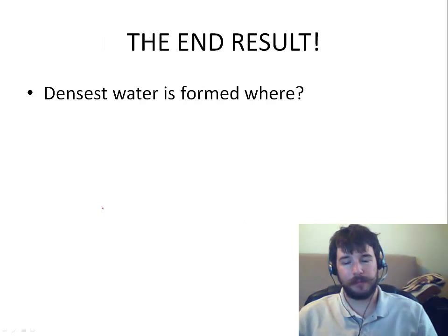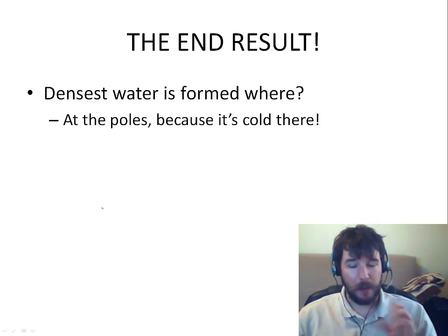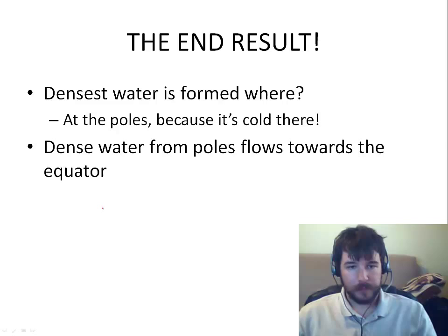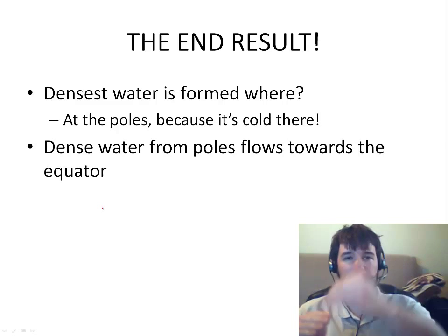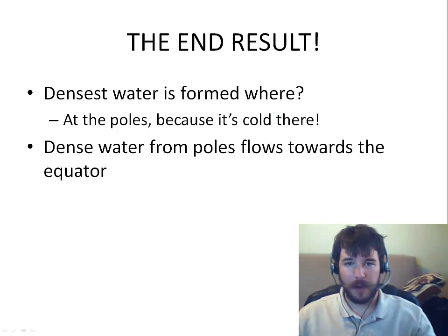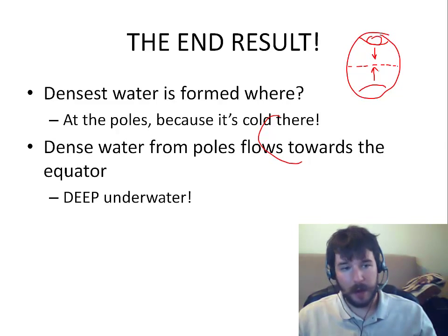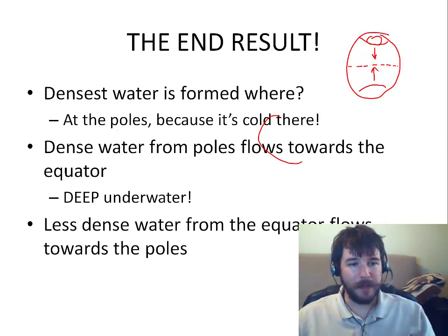So what's the end result? The densest water is formed at the poles because it's really, really cold. The dense water from those poles is going to flow towards the equator, because you've got an area of high density at the poles and an area of low density in the middle — it's essentially diffusion. So with the poles being much denser and the equator being less dense, the water moves from the poles to the equator, just like air flow does. And this is occurring very, very deep in the water.